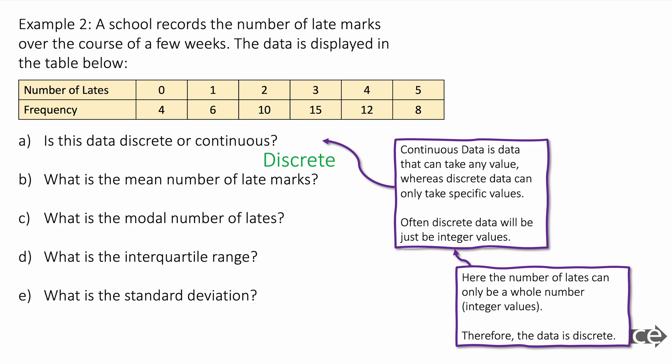We're asked to find the mean, the modal number of lates, the interquartile range, and the standard deviation. And we'll use a GDC to do this for us.